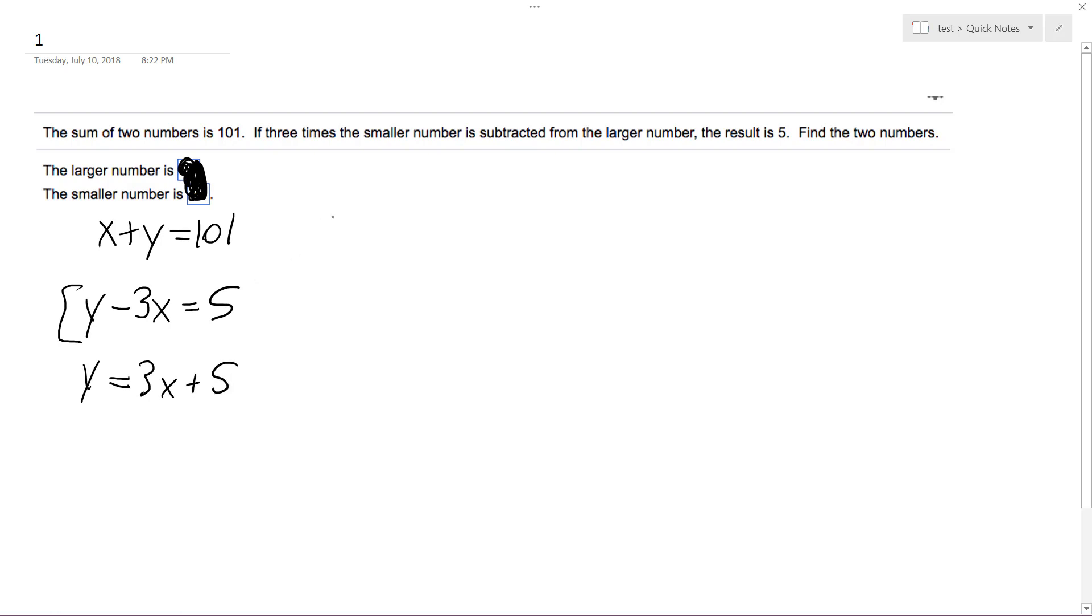So we'll substitute this in. In the first equation we get x + 3x + 5 = 101. So 4x = 96, subtracting 5 from both sides. We get 96 divided by 4, so x = 24.